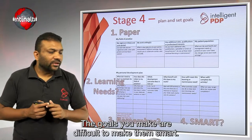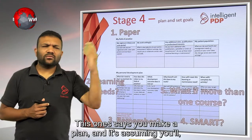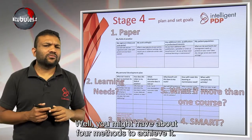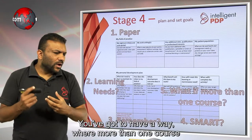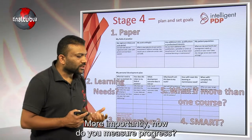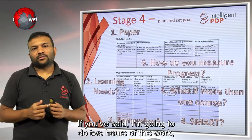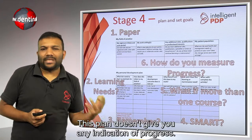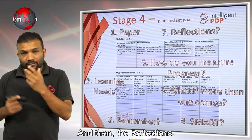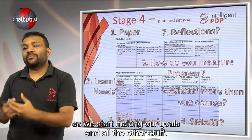The goals you make are difficult to make SMART. If you make a goal and you do more than one course to achieve it, this template assumes just one method. You might have about four methods to achieve a goal, so you need a way where more than one course can be ticked across a goal. More importantly, how do you measure progress? If you've said you're going to do two hours of this work, this plan doesn't give you any indication of progress. Reflections also need another piece of paper. So we're going to start addressing all these things as we start making our goals.